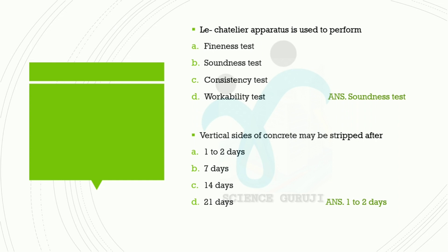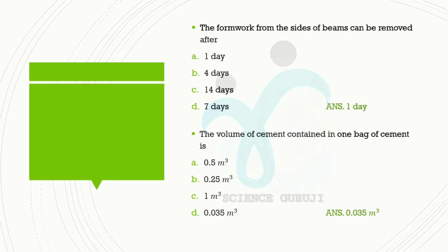Next question: vertical formwork of concrete may be stripped after — Option A: 1 to 2 days, Option B: 7 days, Option C: 14 days, Option D: 21 days. Answer: 1 to 2 days. Next question: the formwork from the sides of beams can be removed after — Option A: 1 day, Option B: 4 days, Option C: 14 days, Option D: 7 days. Answer: 1 day.